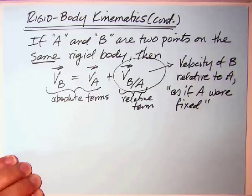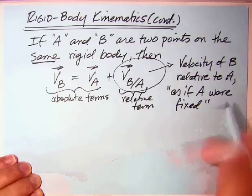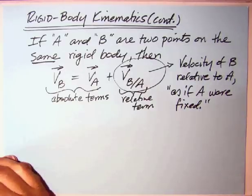So what that says is again the velocity of B relative to A as if A were fixed. It's not fixed, but what that's saying is that we're going to hold our finger at A. What can B do? Well, it will go around in a circle.